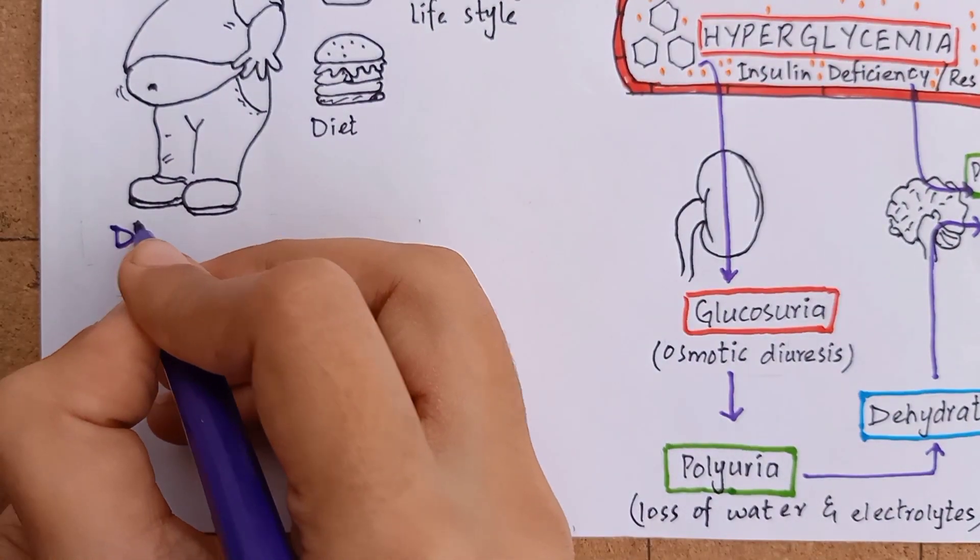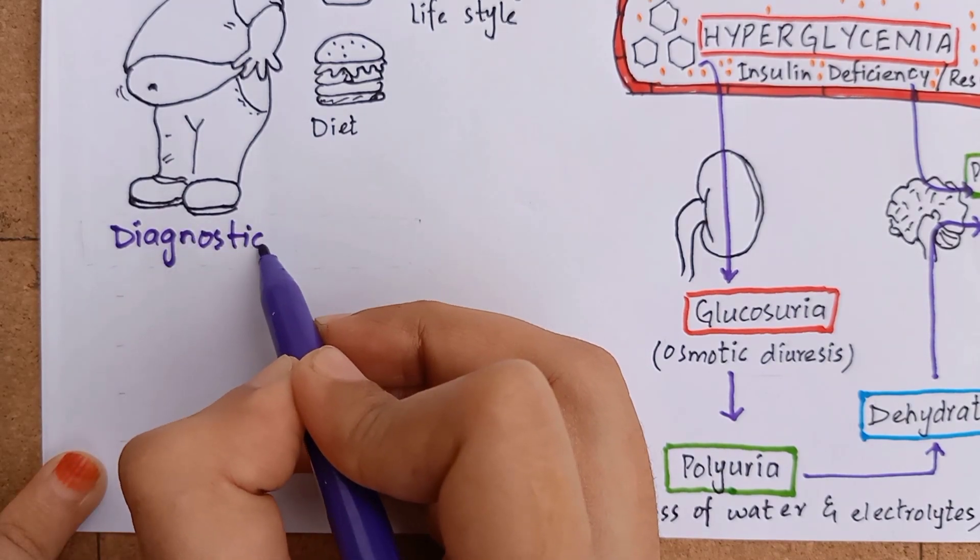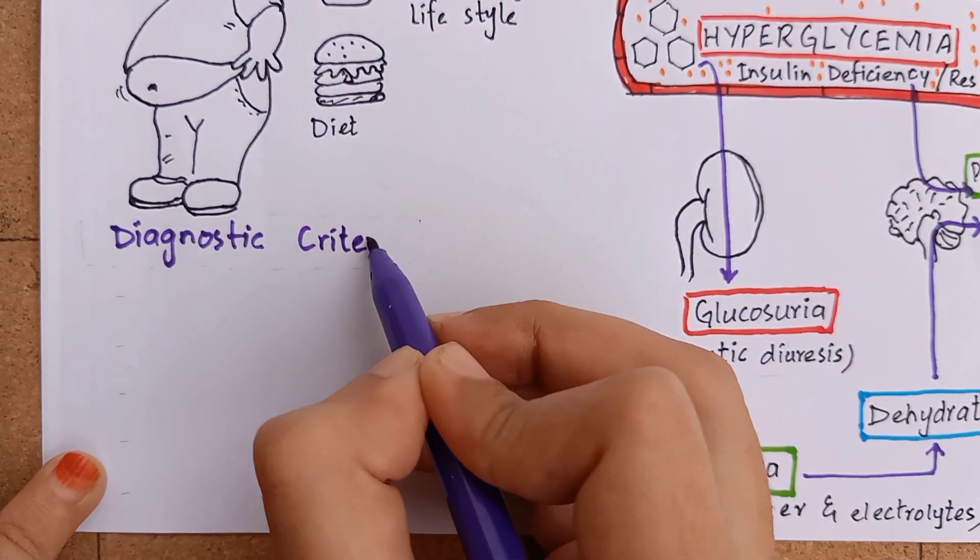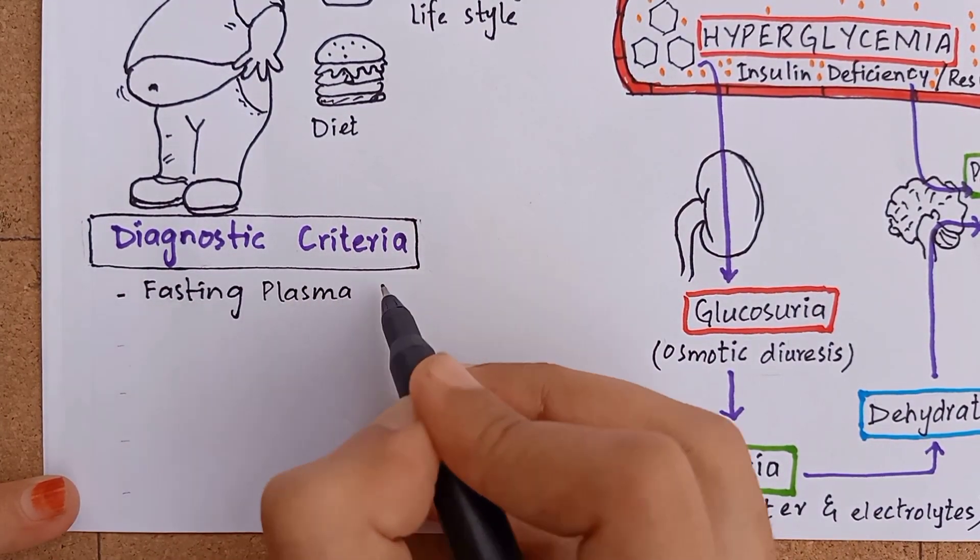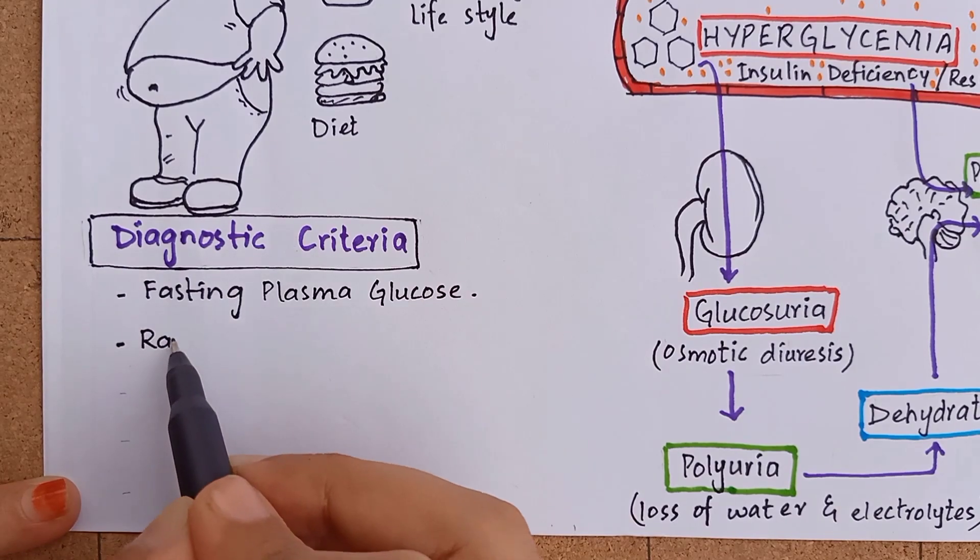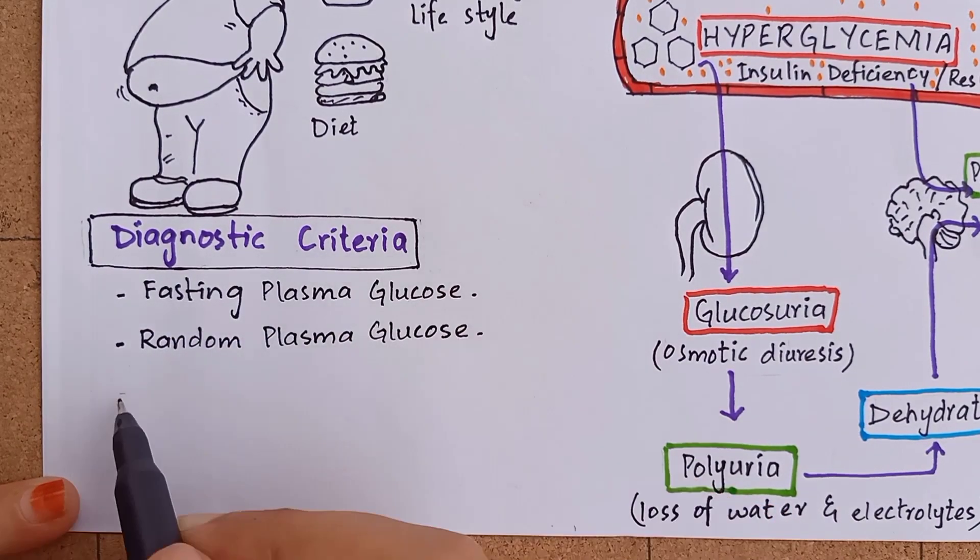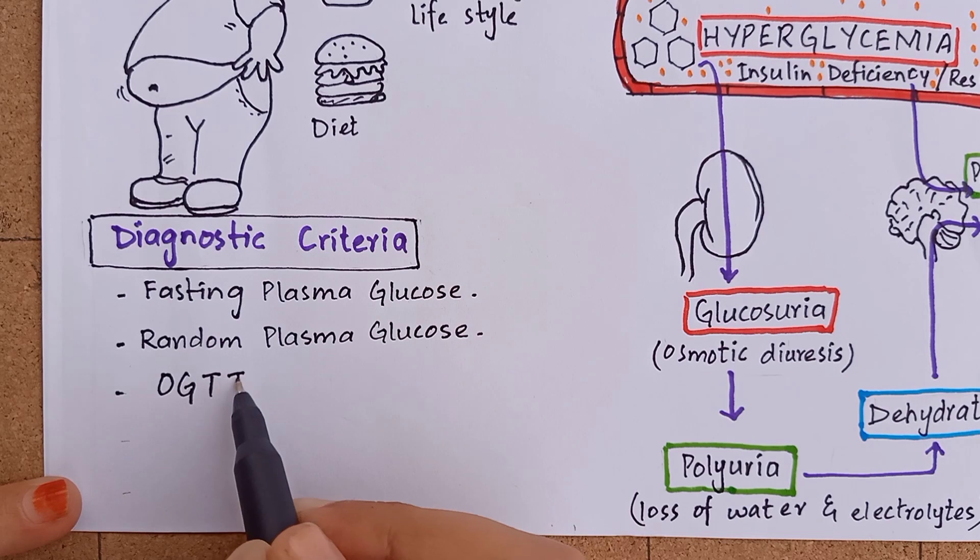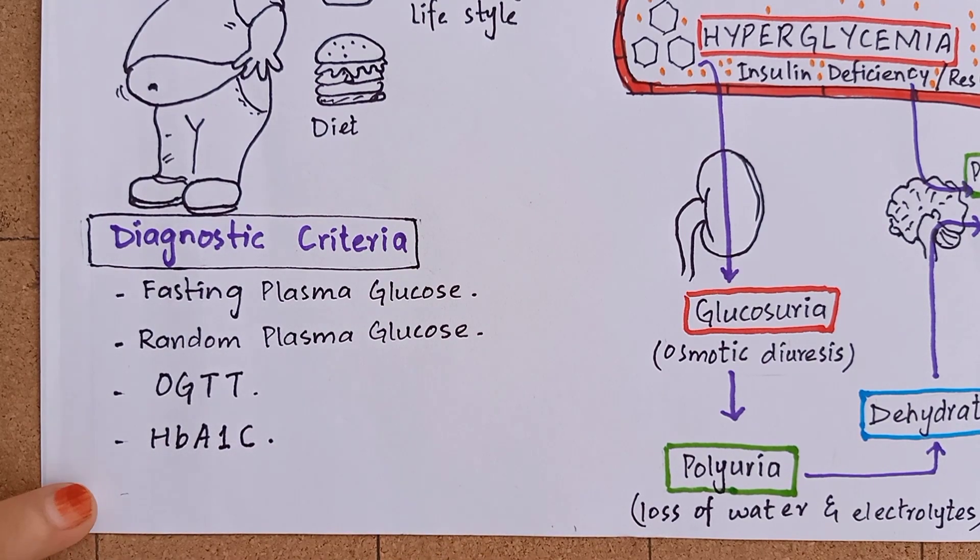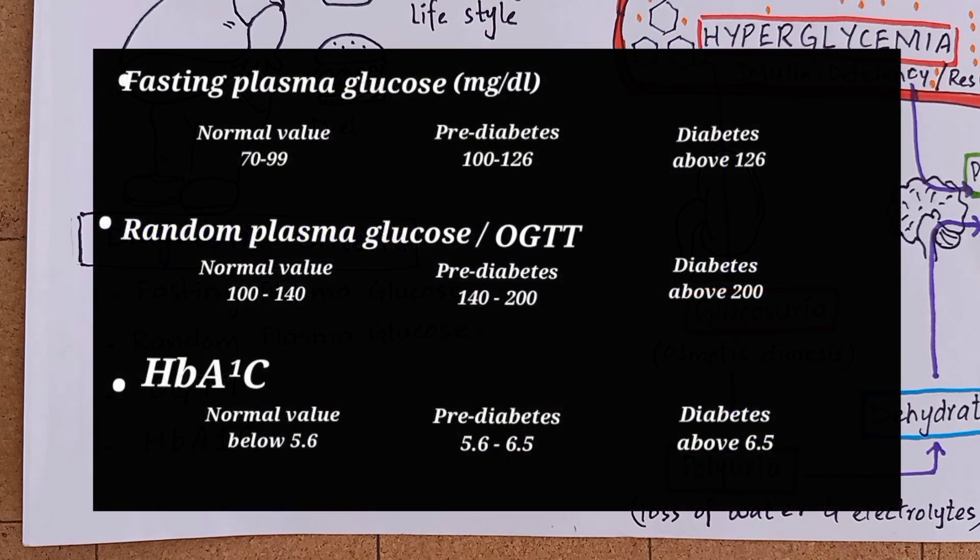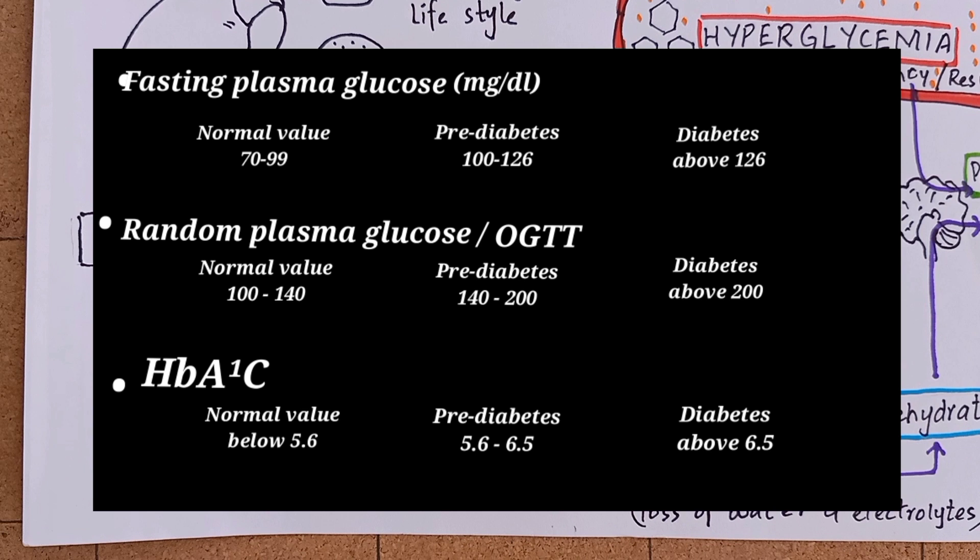Clinical diagnosis of diabetes is made by investigating blood glucose levels. There are certain tests for that purpose, which are fasting plasma glucose, random plasma glucose, oral glucose tolerance test, and HbA1c, also known as glycated hemoglobin. Pre-diabetes is when the blood sugar level is at the borderline—higher than normal but lower than diabetics.